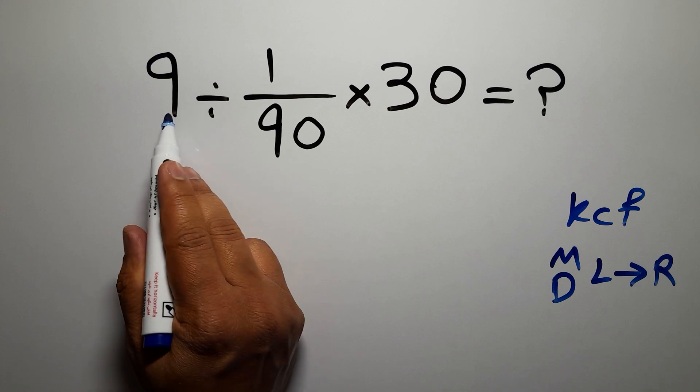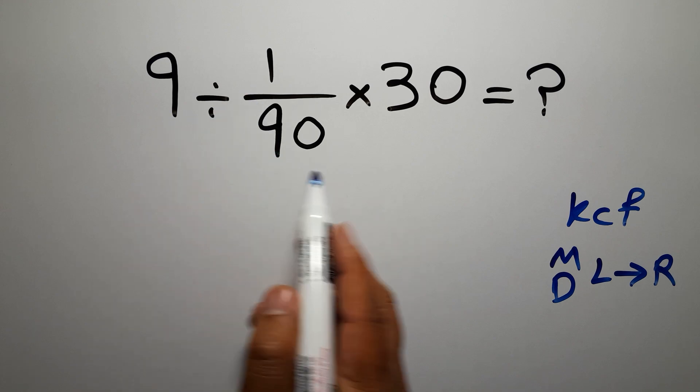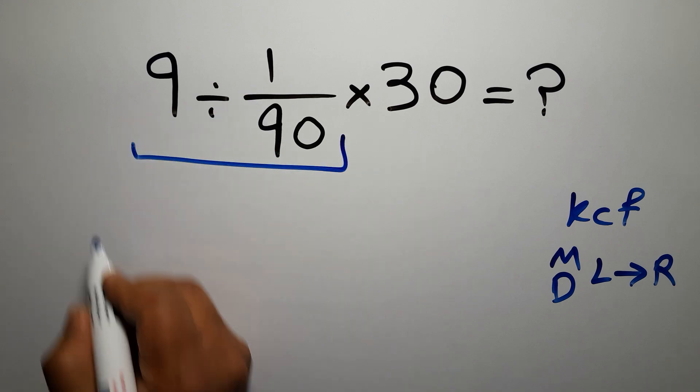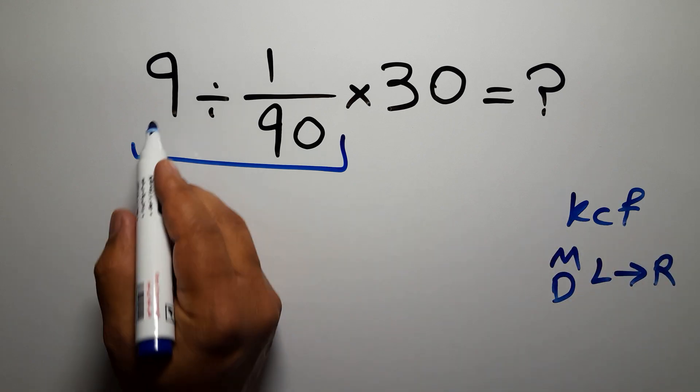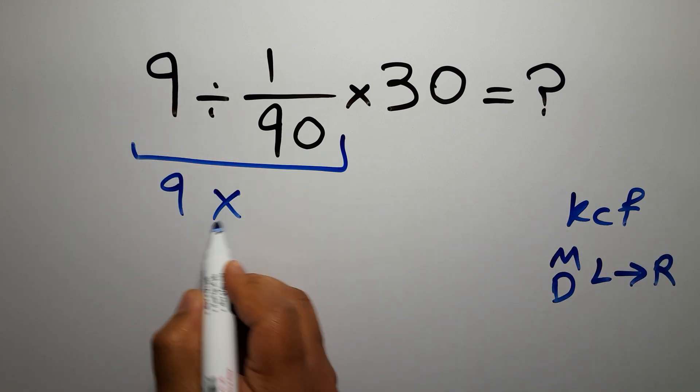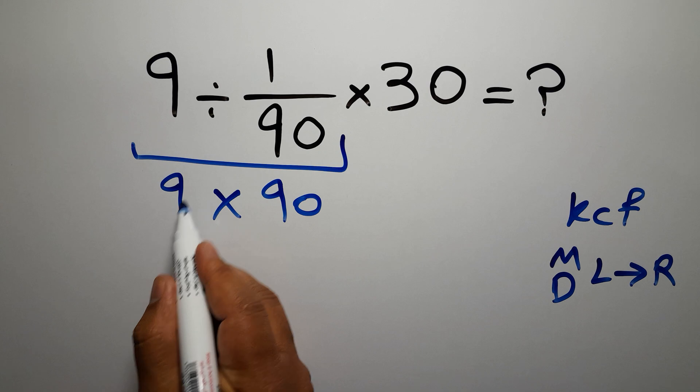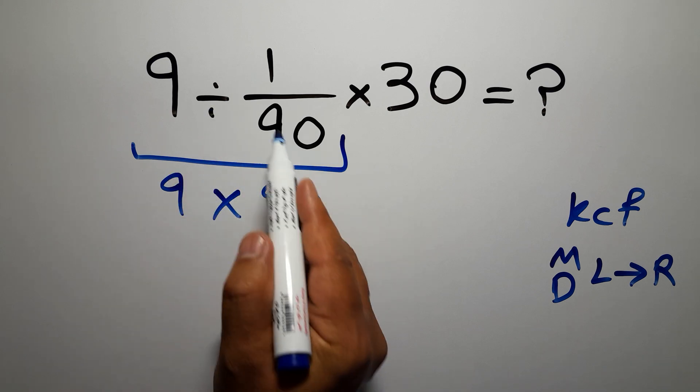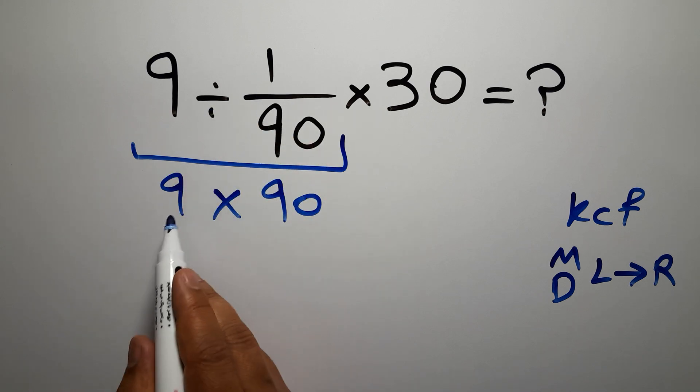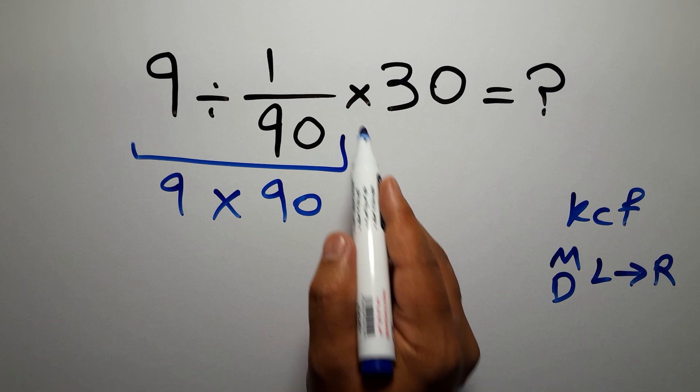Let's start: 9 divided by 1 over 90. According to the KCF rule, we can write 9 times 90. Keep the first fraction, change division to multiplication, and flip the second fraction. So we have 9 times 90 and times 30.